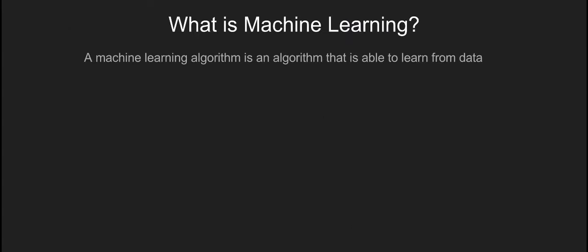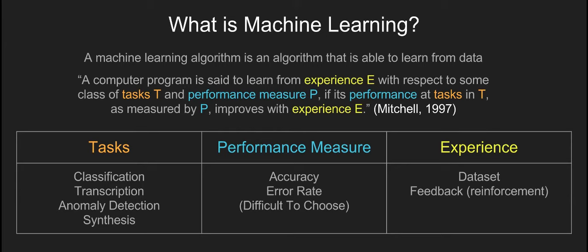So we'll start off quickly with some basics to catch everyone up. Also, if it's okay with you, I'd ask that you ask questions during the talk rather than waiting until the very end — I think it's more pedagogical and interactive. So at a super high level: what is machine learning? It is an algorithm that is able to learn from data. If you want a more concrete explanation, Mitchell defined it in 1997: a program is said to learn from experience with respect to some task and performance measure if its performance at those tasks improves with experience.